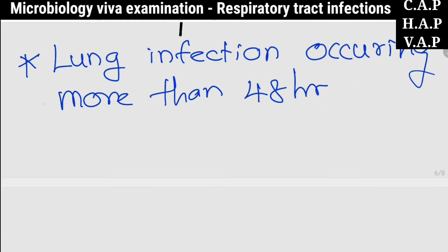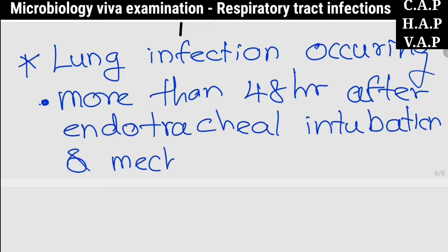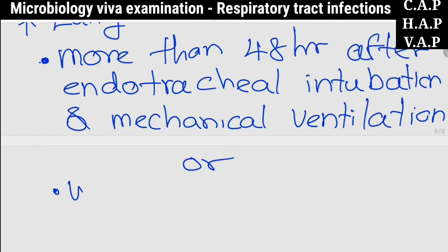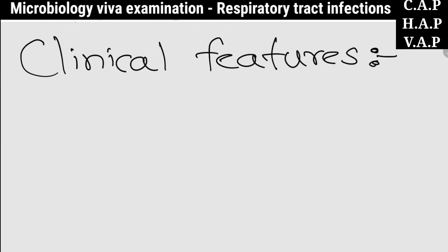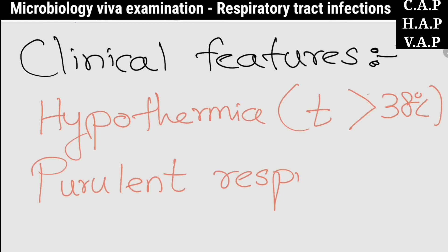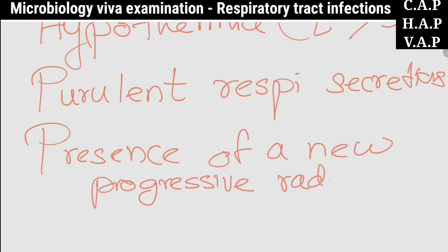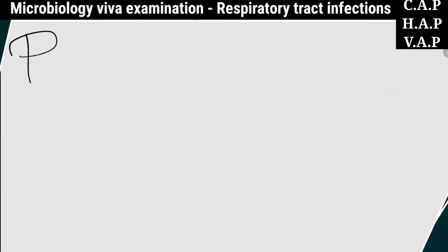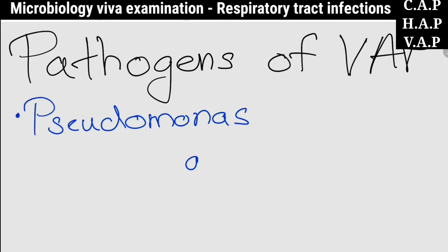Ventilator-associated pneumonia is a lung infection occurring more than 48 hours after endotracheal intubation and mechanical ventilation, or within 48 hours of extubation. The clinical features include hypothermia, purulent respiratory secretions, and the presence of new or progressive radiographic infiltrates.